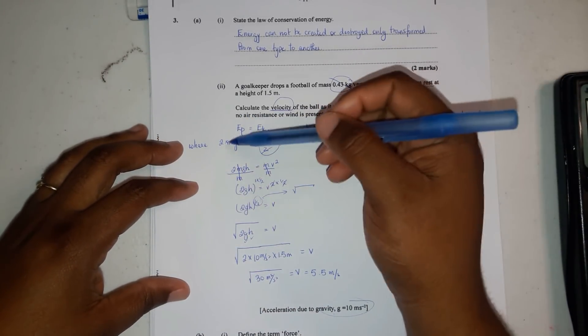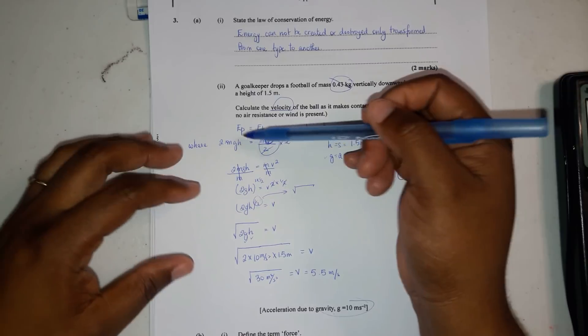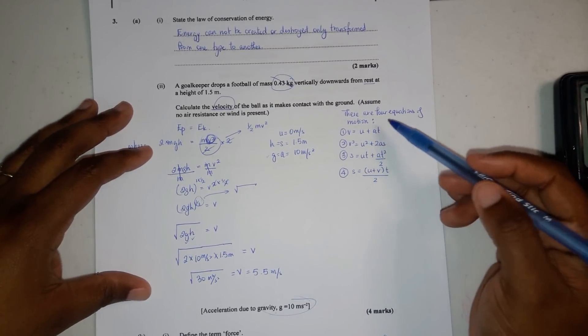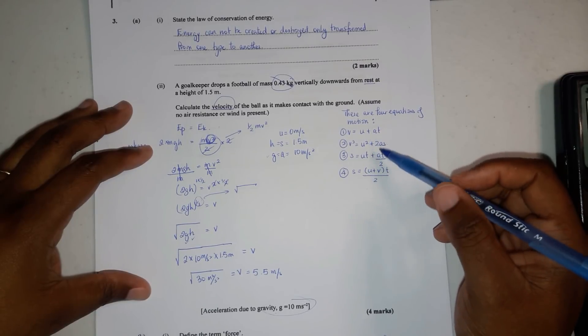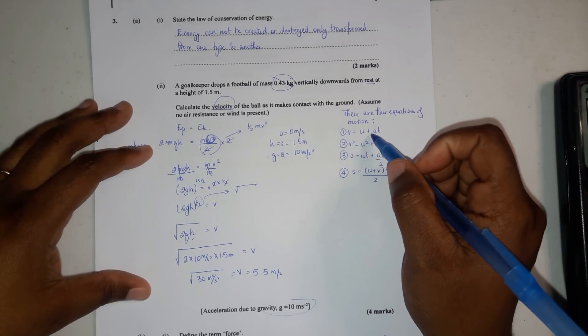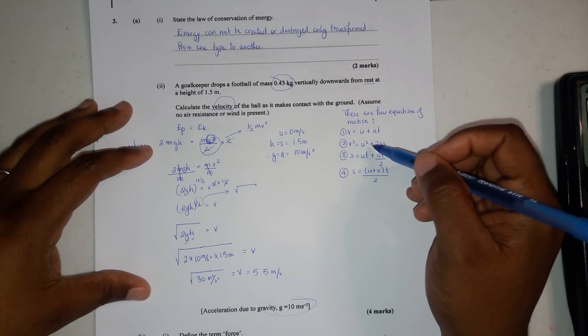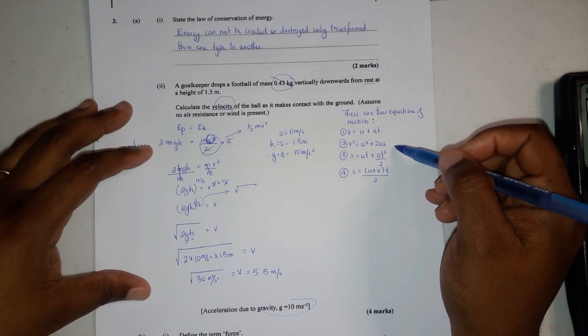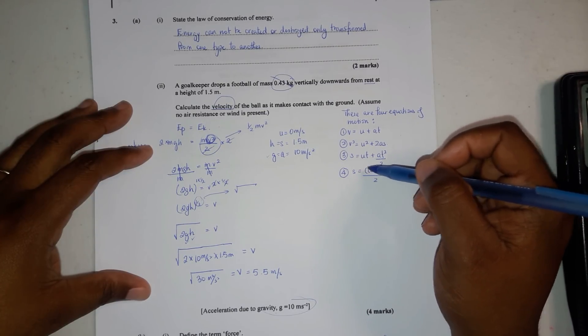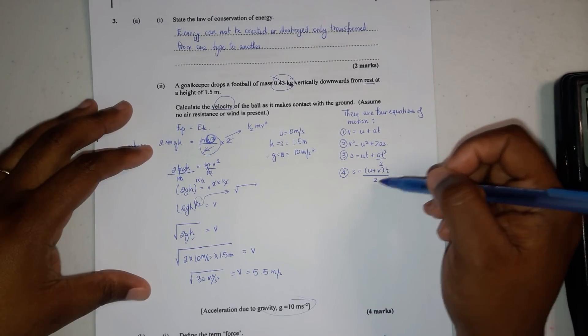Suppose you didn't know how to equate EP equals EK. You could also use one of the four equations of motion. You have v equals u plus at, v squared equals u squared plus 2as, s equals ut plus at squared over 2, and s equals u plus v in brackets times t over 2.